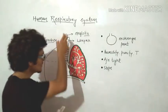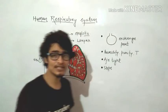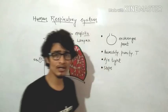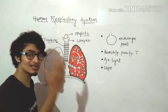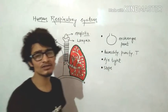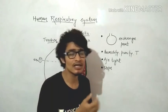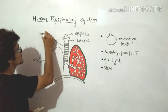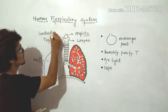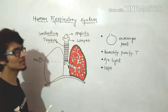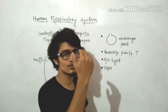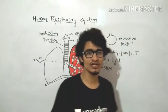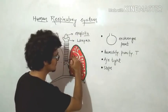From the external nostril down to the terminal bronchiole, all of this is the conducting path. The conducting path's only work is to transport air — there is no gas exchange taking place anywhere along this section.